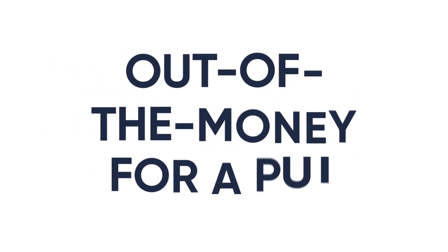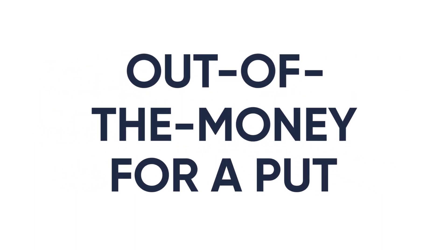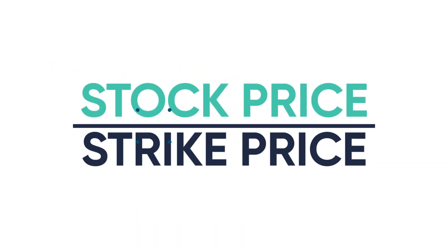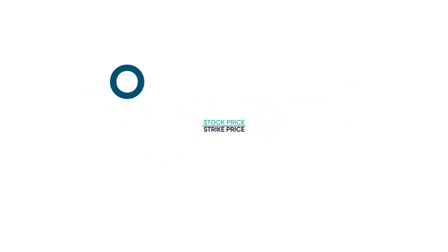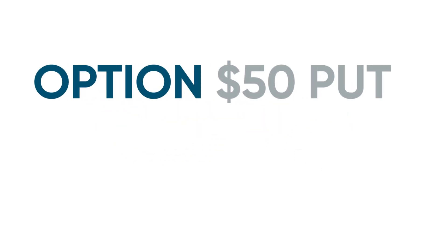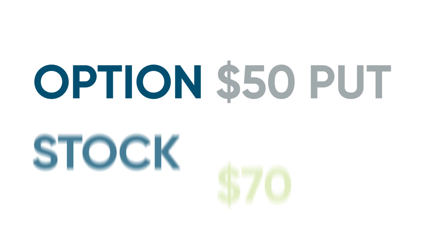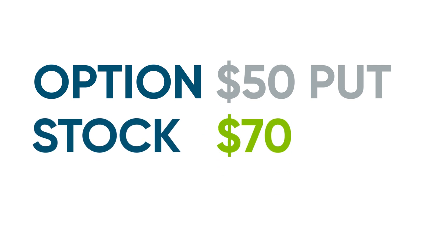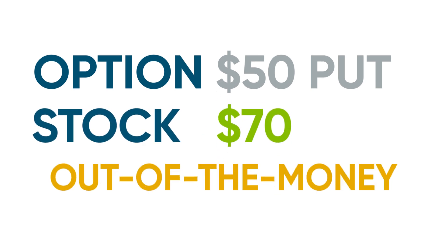Out of the money for a put is when the strike price is below the current stock price. So if you have a $50 put option when the stock is trading at $70, that option is said to be out of the money.